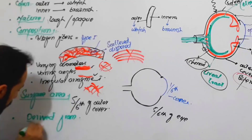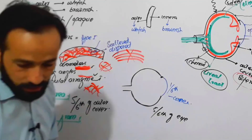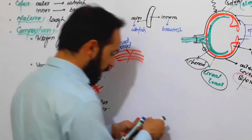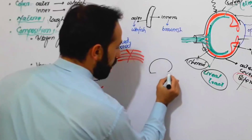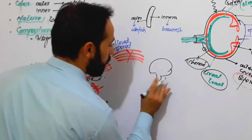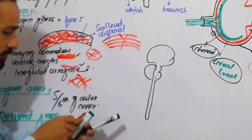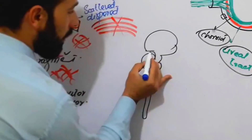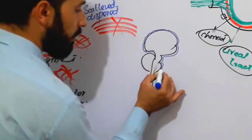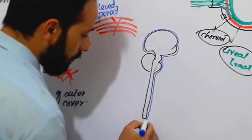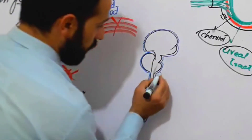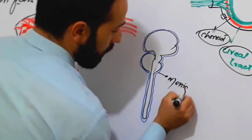The next important point is that the sclera is derived from the dura mater. As we know, our brain, spinal cord, and the largest nerves in our body are covered with a special membrane called the meninges.